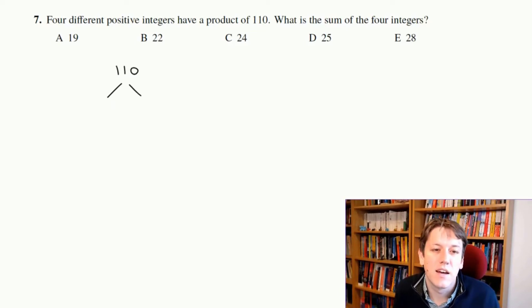A lot of people do this with a tree diagram here. So I've got 110. I could split that as 11 and 10, and then 10 I can split as 2 and 5 until I get down to prime numbers. So I know that 110 is equal to 2 times 5 times 11.